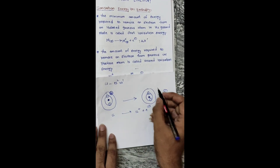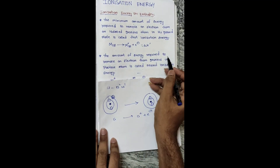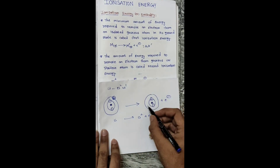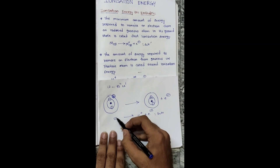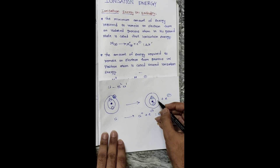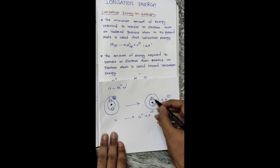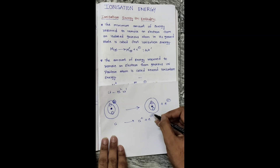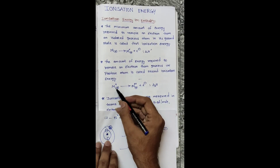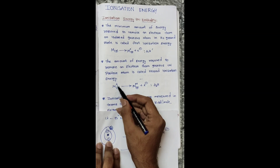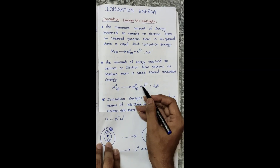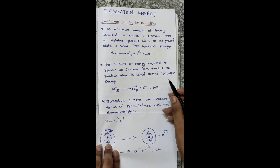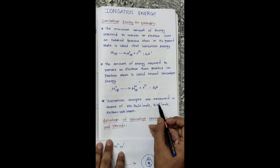The second ionization energy is the amount of energy required to remove an electron from a gaseous unipositive atom. First, lithium becomes a unipositive lithium ion. Removing another electron from that positive ion requires the second ionization energy, making it Li2+.